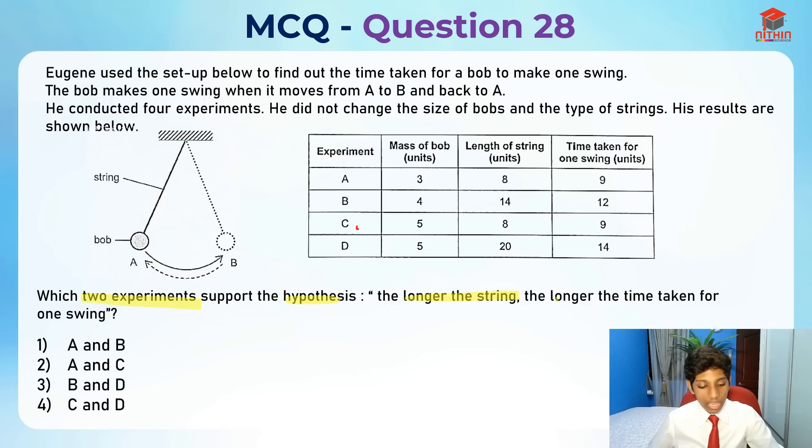As you can see, C and D should be the right option. Because as you can see, the longer the string, the longer the time taken for one swing. You can see that this is shorter string and shorter time, and this is longer string and longer time taken.